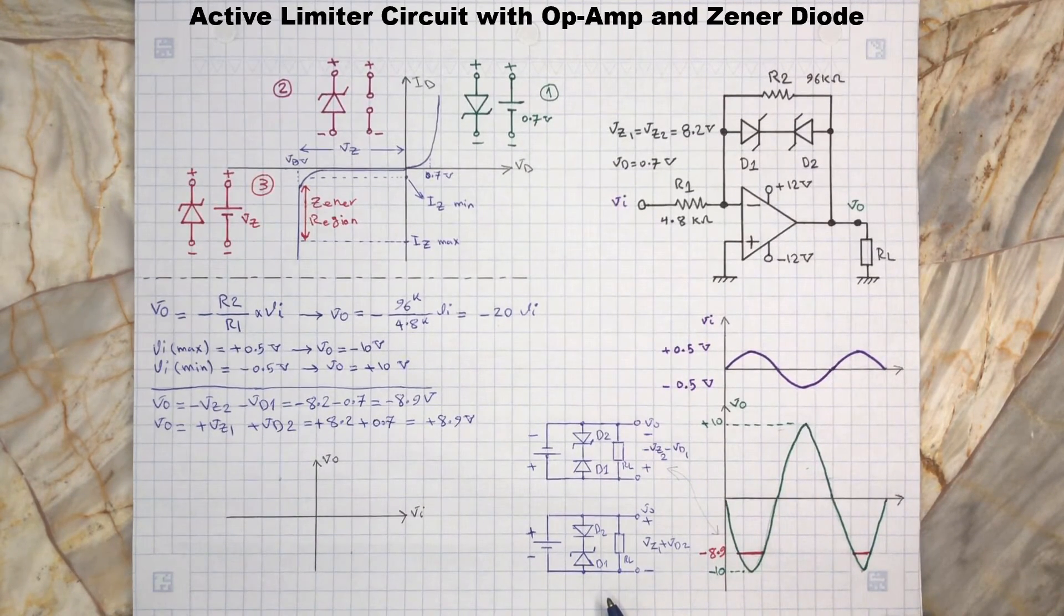Therefore, as long as D1 stays in the breakdown region, it will limit the output voltage at positive 8.9 volts. So we have...